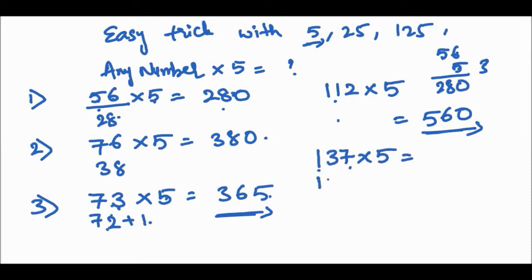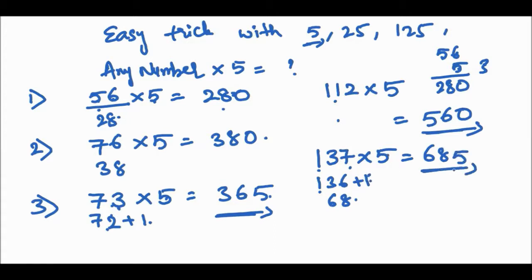For 137 into 5: take the nearest smaller even number, 136. Half of 136 is 68. Since 137 = 136 + 1, the answer is 685. You can do any multiplication easily in 1 or 2 seconds with this trick.